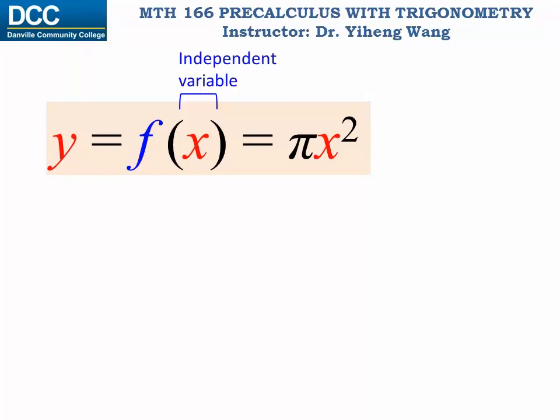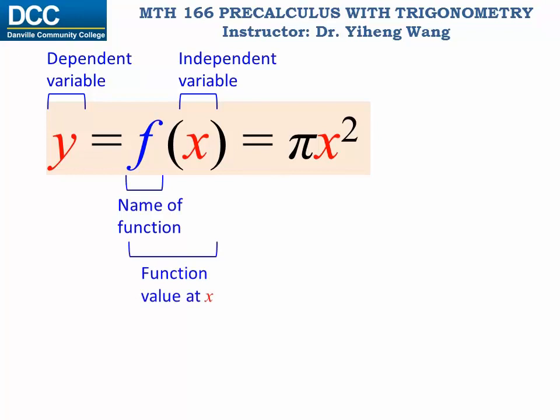And y is the dependent variable, or the output. f now is the name of the function, but f(x) together represents the function value evaluated at x. And lastly, this is the rule of relation, but since here it is an equation, therefore it is the rule of evaluation.